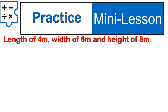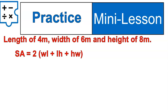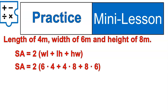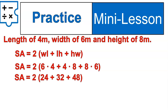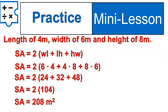Try out this formula as additional practice. If you have a length of 4, a width of 6, and a height of 8 meters, use the surface area formula to find the surface area of this rectangular prism. When you substituted those numbers in, you should get something that looks like this. Following the order of operations, multiply first: 6 times 4 is 24, 4 times 8 is 32, 8 times 6 is 48. Then simplify what is inside the parentheses to get 104, and multiply 104 times 2 to get 208 square meters.